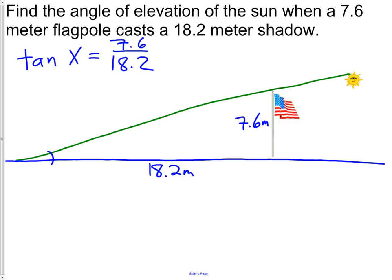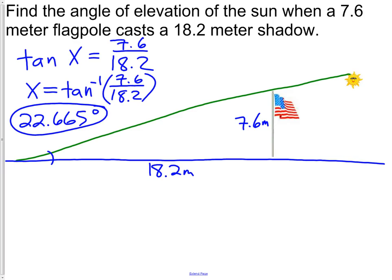Here, notice we're solving for an angle. If you remember from our notes the last time, whenever we're trying to find an angle, we're going to use the inverse operation. x is equal to tangent negative 1, which is inverse tangent, of 7.6 divided by 18.2. Now, get out your calculator and do the calculations. You will see that you get 22.6645 or 22.665 degrees. There's our angle of elevation.